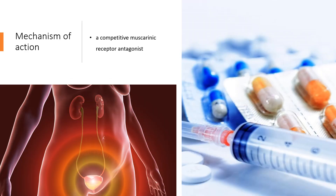Mechanism of Action. Solofenicin is a competitive muscarinic receptor antagonist. It has the highest affinity for M3, M1, and M2 muscarinic receptors. 80% of the muscarinic receptors in the bladder are M2, while 20% are M3. Solofenicin's antagonism of the M3 receptor prevents contraction of the detrusor muscle, while antagonism of the M2 receptor may prevent contraction of smooth muscle in the bladder.